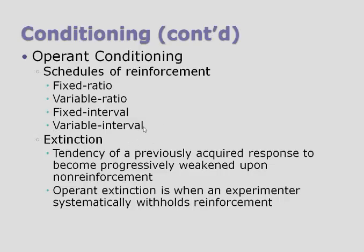Variable interval is the idea that you get rewarded the first time you do a behavior after some amount of time passes, but you don't know how much time has to pass before you get the reward. Fishing is a good example — you cast a line and you don't know how long you'll have to wait until you get a bite. It could be two seconds, or it could be hours and hours with no bite at all. That's variable interval — you don't know how long you're going to have to wait.